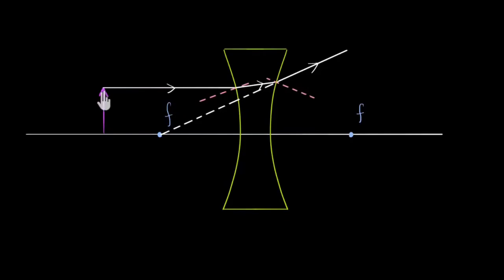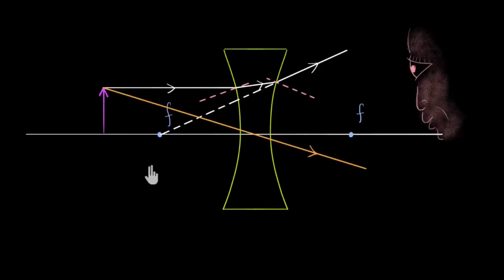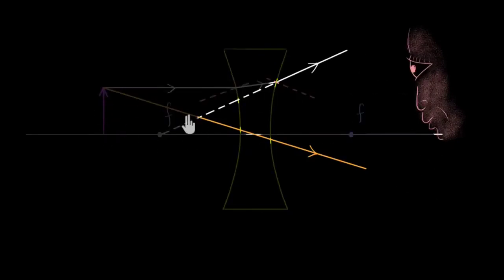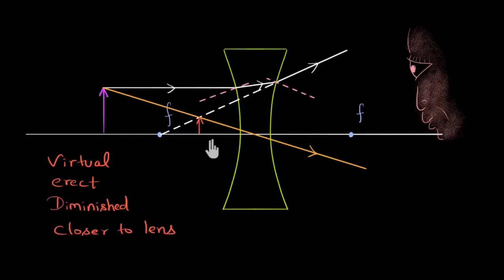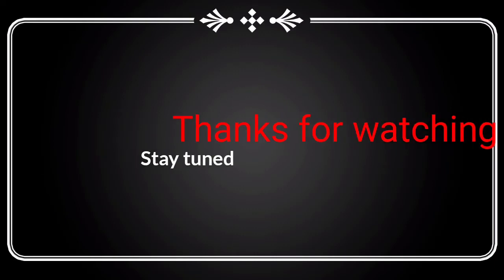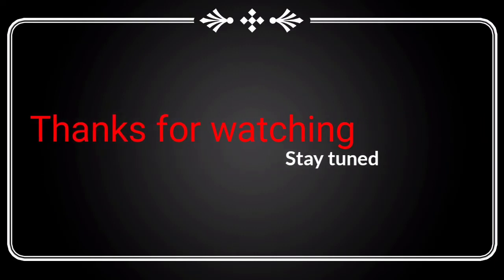While the object is placed at various positions, the image characteristics change in terms of size and position. We check the image formed in each case. The image formation depends on the object distance relative to the focal length.